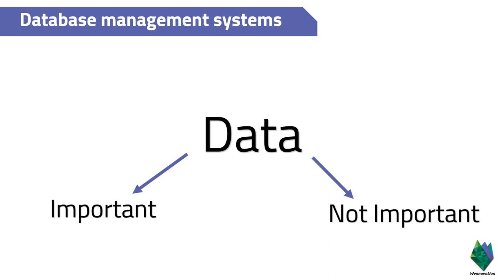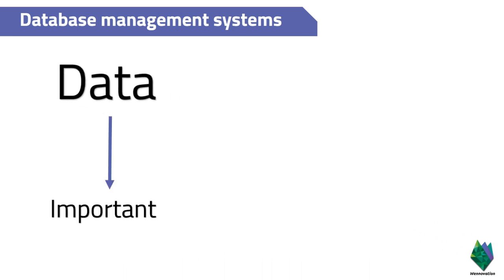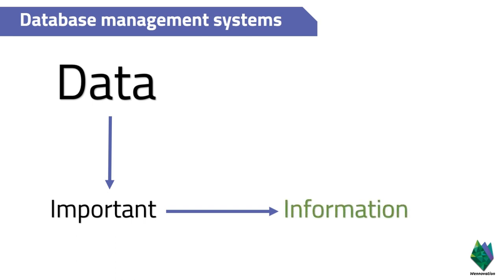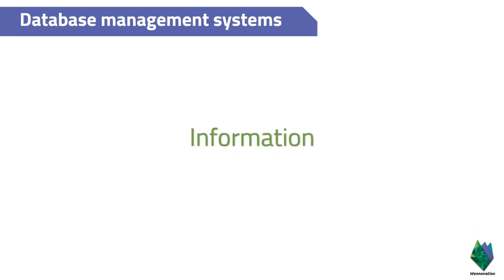A media file could be an image, a video, or audio. Data can be further categorized into two categories: important data and not-so-important data, because data can either be something meaningful that you really want, or something that you don't want. When we talk about important data, we're talking about data that has information. Information is simply described as data that is of value, data that is important.